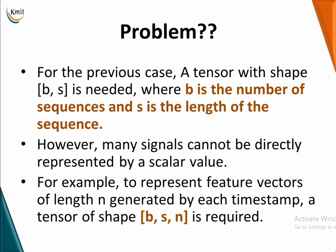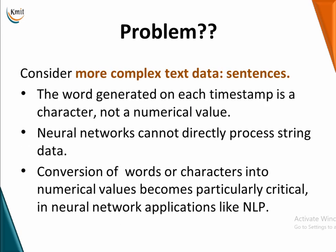Many signals cannot be directly represented by a scalar value. If you want to represent a feature vector of length N generated at every time step, which is sequential in nature, then you will have to represent it as B comma S comma N. So B is the number of sequences, S is the length of the sequence, and N is the feature vector length. It becomes more complex.